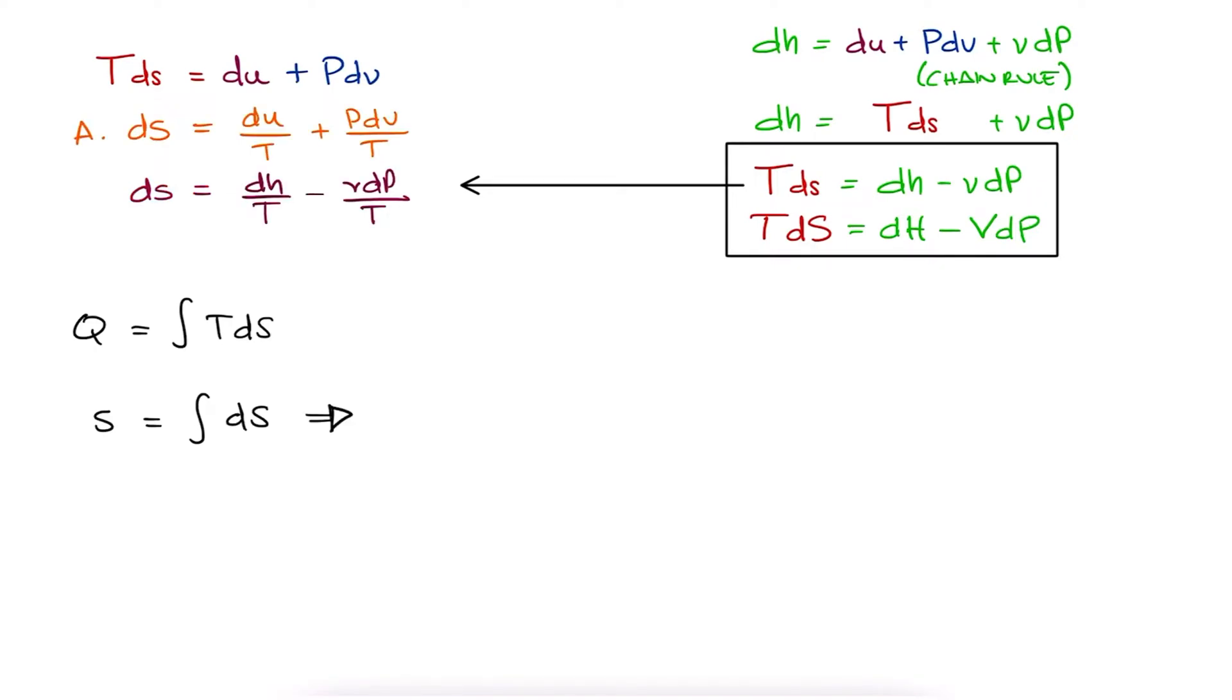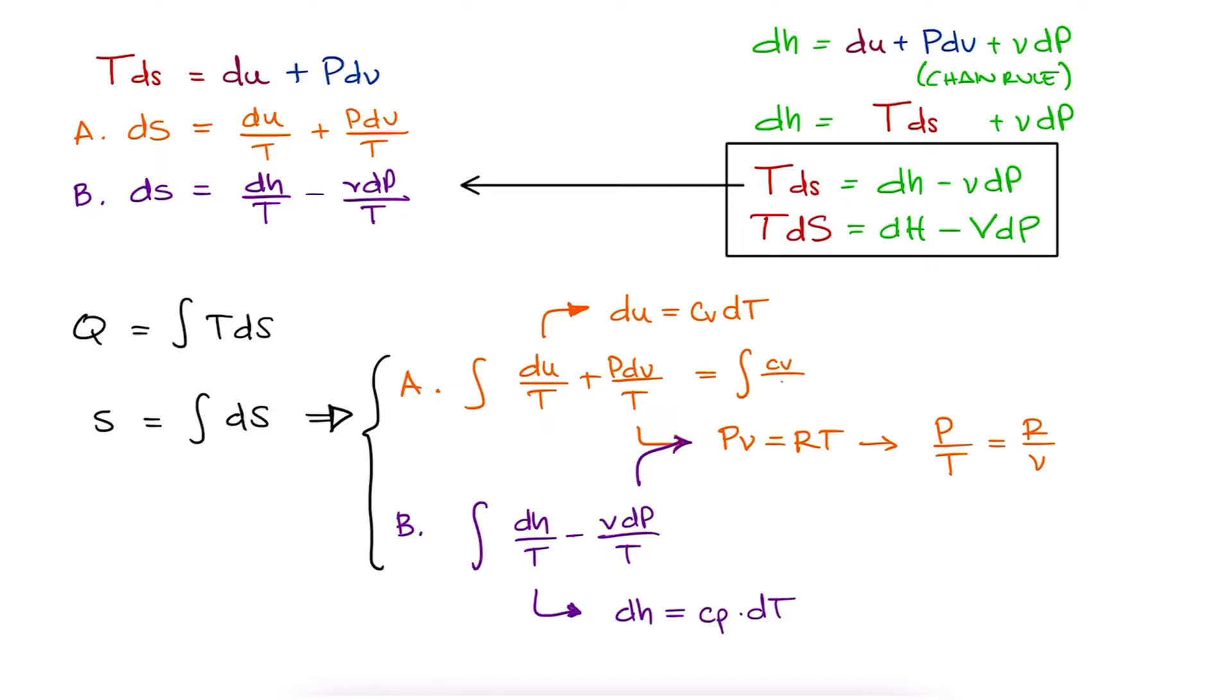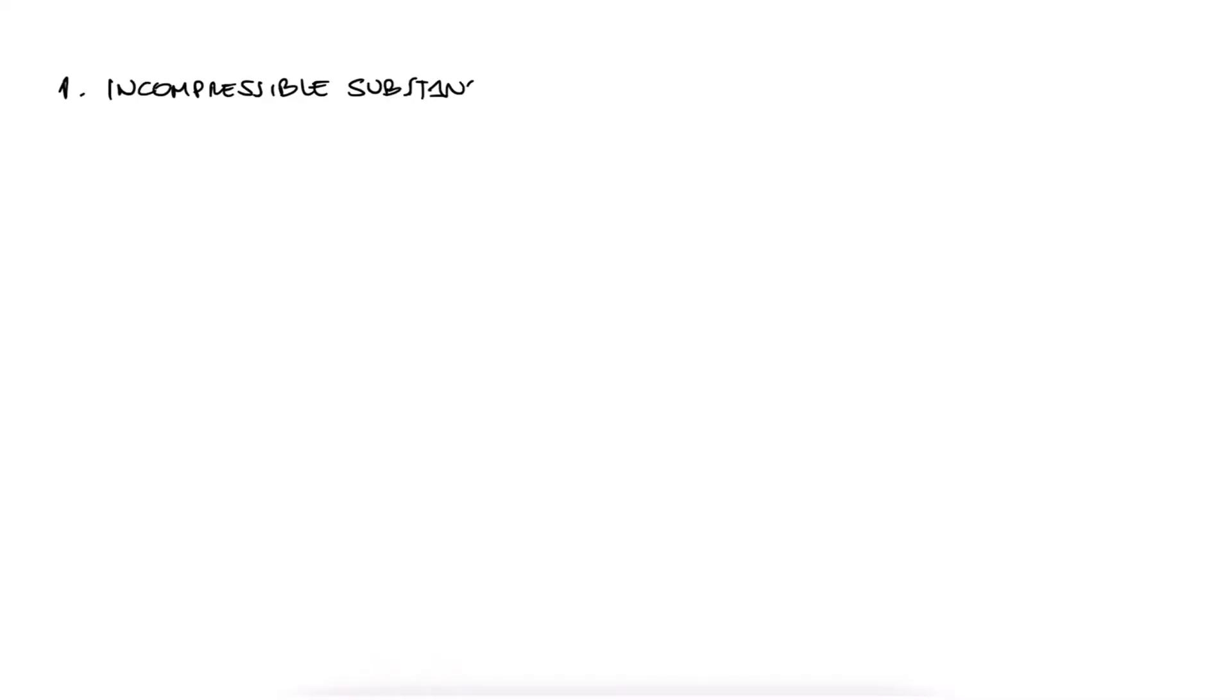we can substitute ds in terms of temperature and all we need is a relationship between du and T, which we have, a relationship between P over T and V, which we also have, and a relationship between dh and T. So the integrals become much simpler now. Now let's use some of these for incompressible substances and then ideal gases, and at the end see how we can use these for isentropic processes.